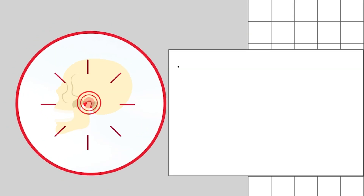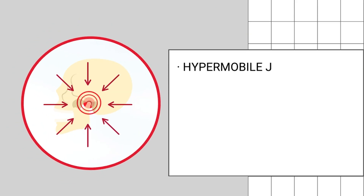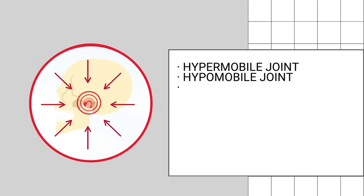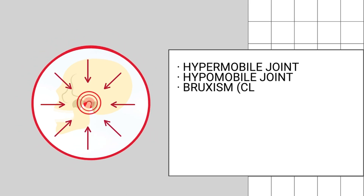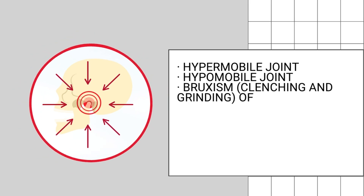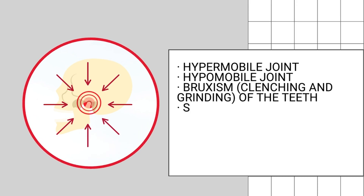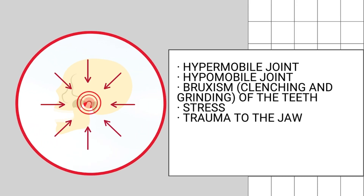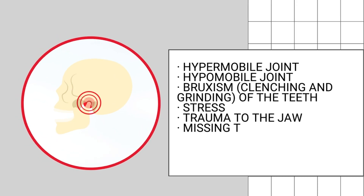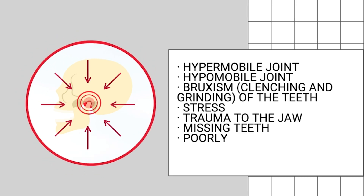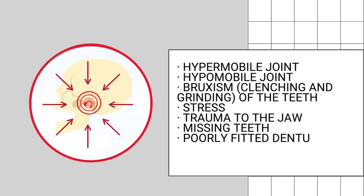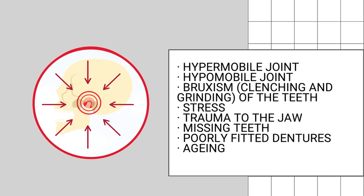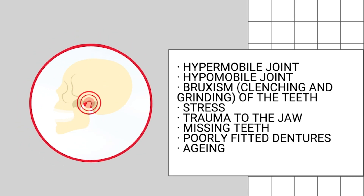These include a hypomobile joint, bruxism which is clenching and grinding of the teeth, stress, trauma to the jaw, missing teeth, poorly fitted dentures, and aging.